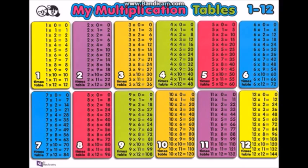4 x 0 is 0, 4 x 1 is 4, 4 x 2 is 8, 4 x 3 is 12, 4 x 4 is 16, 4 x 5 is 20, 4 x 6 is 24, 4 x 7 is 28, 4 x 8 is 32, 4 x 9 is 36, 4 x 10 is 40, 4 x 11 is 44, 4 x 12 is 48.